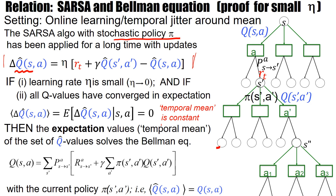And now I have two strong assumptions. The first one is that the learning rate η is very small. The second assumption is that all Q values have converged in expectation, meaning that the expectation of the updates δQ-hat(SA) is zero. The claim is then that these expectations of the Q-hat are Q values that solve the SARSA equation.